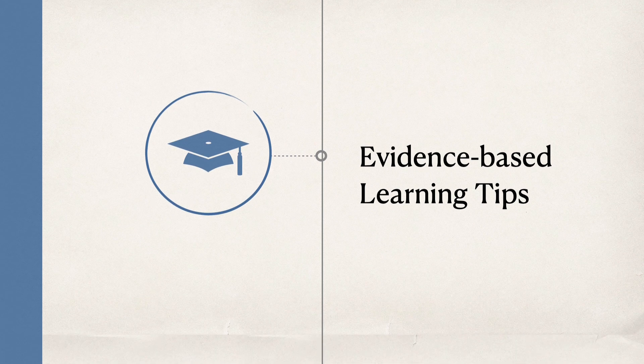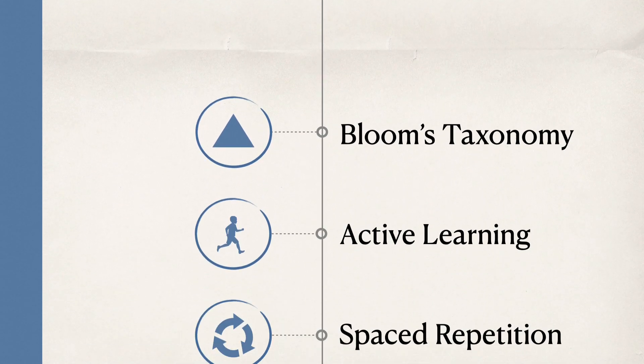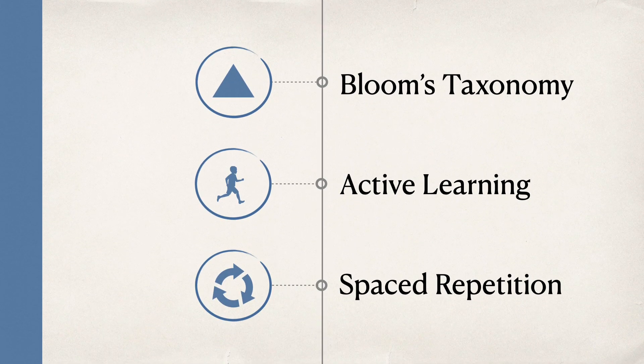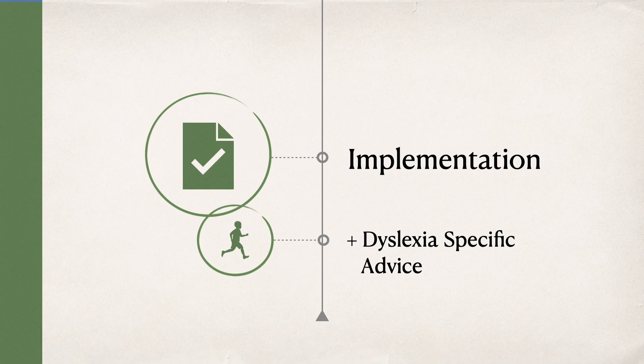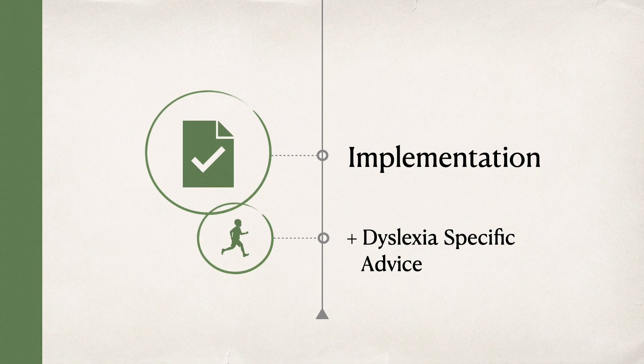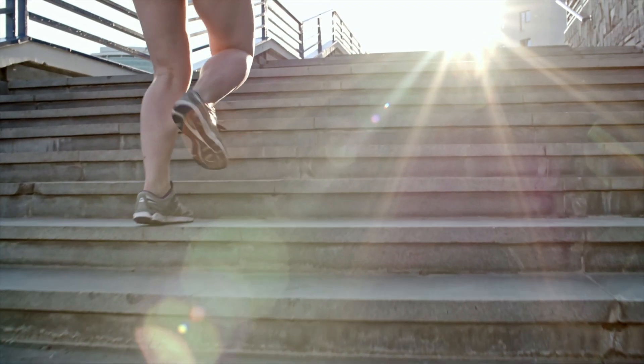Within that chapter, I will go over Bloom's Taxonomy, Active Learning, and Spaced Repetition. After all of that is done, I will get into the implementation of all these concepts, while also giving you dyslexic-specific advice. So let's get into the science.